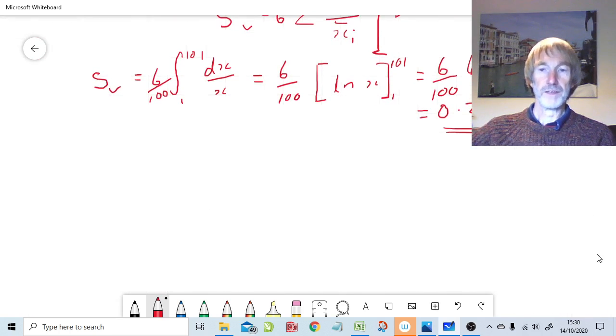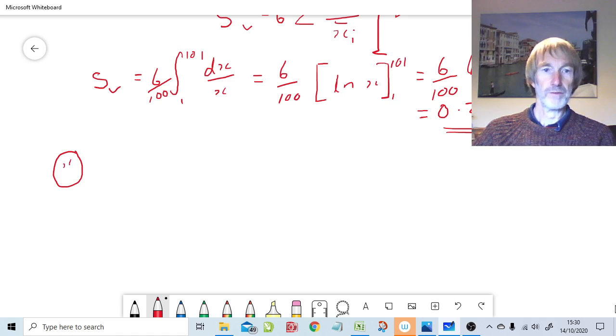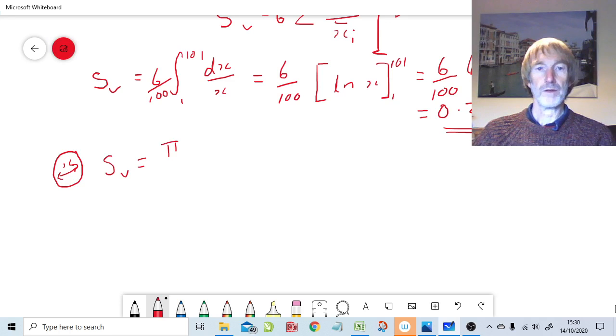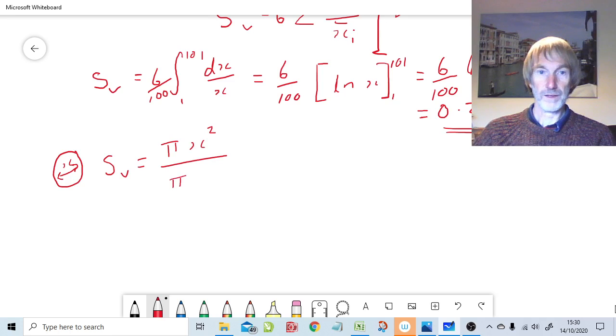Now we're asked to calculate the Sauter mean diameter. And the Sauter mean diameter is the equivalent spherical diameter. So let's try and draw a sphere, which I'm never very good at. And that is x the diameter of the sphere. So Sv of this sphere that I've just drawn is going to be pi times x squared because that's the surface area of a sphere divided by pi over six x cubed, because that's the volume of a sphere.